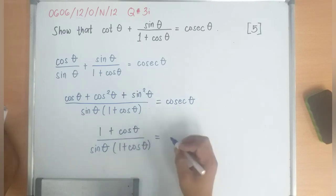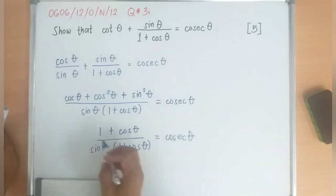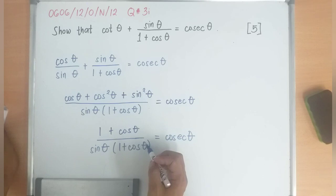Is equal now to cosecant theta. And remember, since I have 1 plus cosine on the numerator, and I have 1 plus cosine in the denominator,